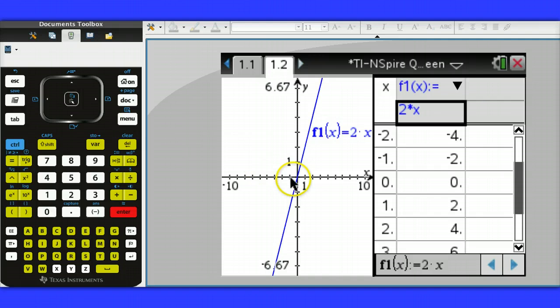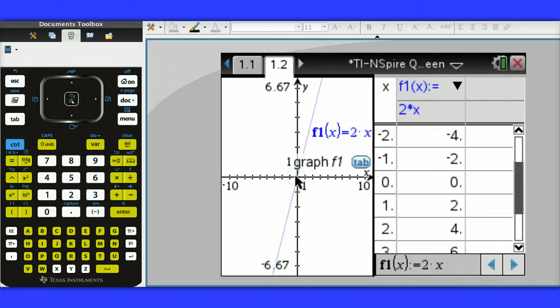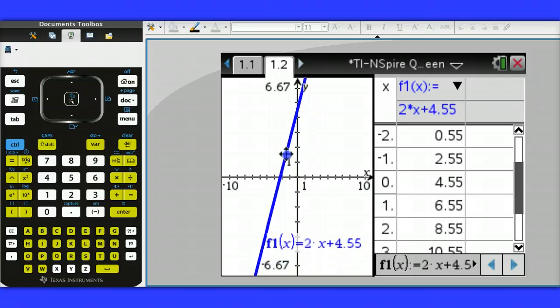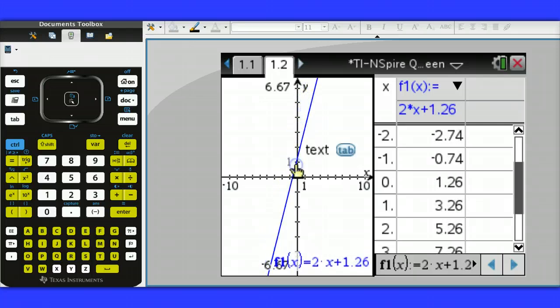We could also change within the graph. So let's take a look at changing within the graph. Grab the graph, and notice the y-intercept changes on the graph, and also the values change in the table.